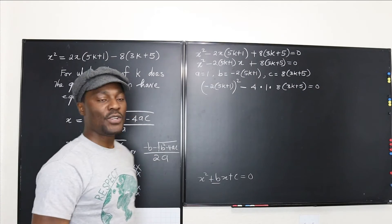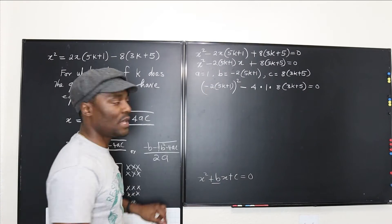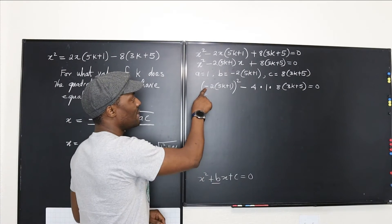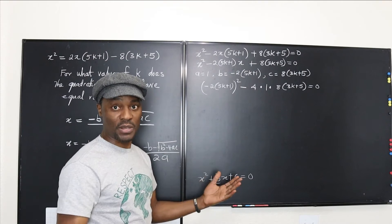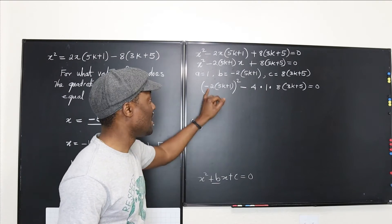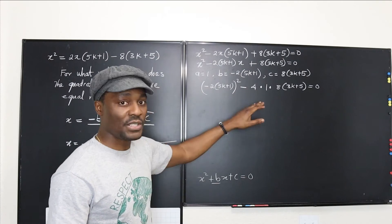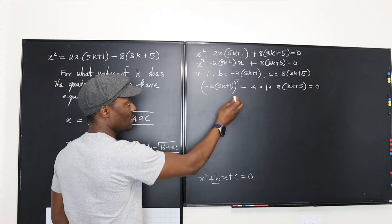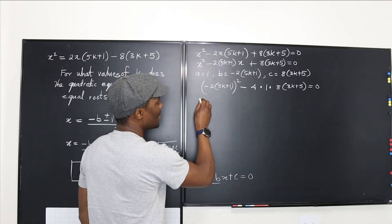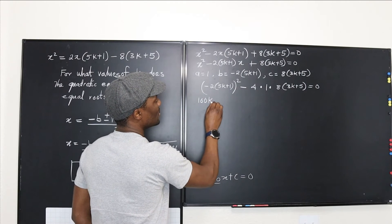Now we need to distribute and expand. When you expand this, the negative sign will disappear because squaring a negative makes it positive. If you distribute, this is going to give you 100k squared.